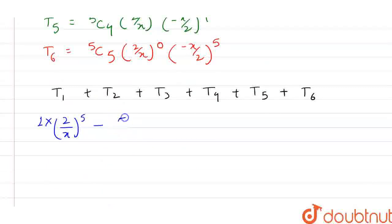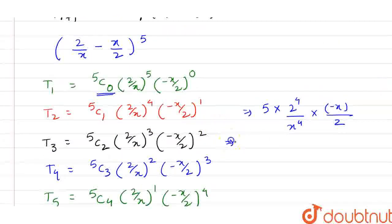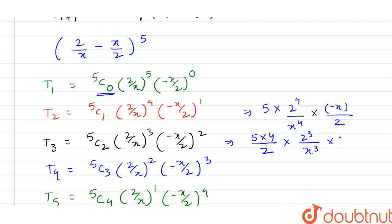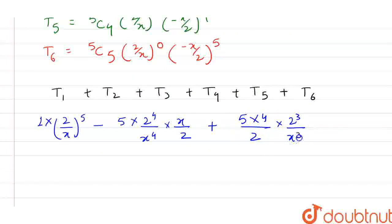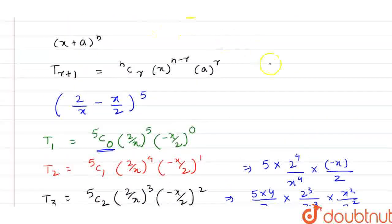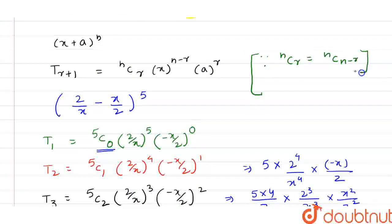So T2 can be written as 5 times 2^4/x^4 times x/y². For T3: 5C2 equals (5×4)/2 = 10, giving T3 equal to (5×4)/(2) times (2^3/x^3) times (x²/y⁴). We also know that nCr equals nC(n−r).